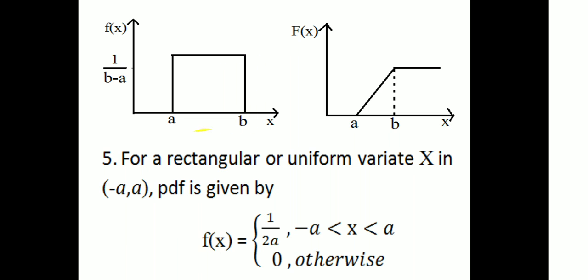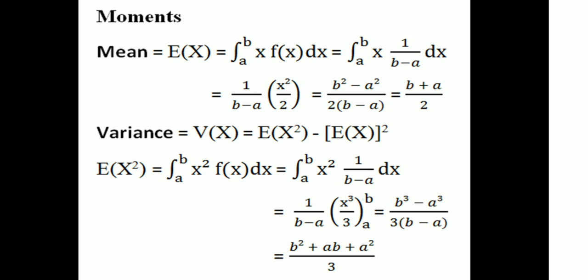Fifth: for a rectangular or uniform distribution on (−a, a), the probability density function is given by f(x) = 1/(2a), where x varies in (−a, a), and 0 otherwise. In the general uniform distribution f(x) = 1/(b − a), when b = a and a = −a, the interval becomes 2a, giving f(x) = 1/(2a).